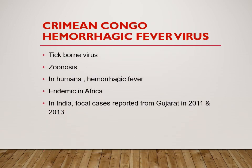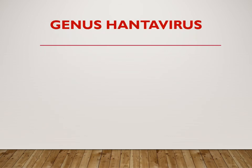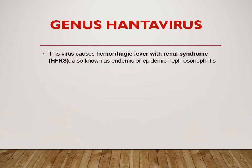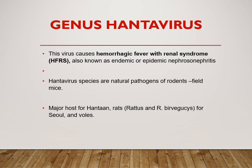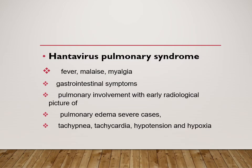Crimean-Congo Hemorrhagic Fever (CCHF) is a tick-borne zoonotic disease endemic in Africa; a few cases have been reported from Gujarat, India in 2011 and 2013. Next is the Hantavirus, which causes Hantavirus Fever with Renal Syndrome. This virus is mainly present in rodents — field mice, Rattus rattus, R. norvegicus, and voles — which are the major hosts. Hantavirus can also cause Hantavirus Pulmonary Syndrome, characterized by fever, malaise, myalgia, gastrointestinal symptoms, and pulmonary involvement with a radiological picture of pulmonary edema, along with tachypnea, tachycardia, hypertension, and hypoxia.